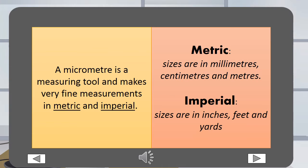Metric sizes are in millimetres, centimetres and metres. Imperial sizes are in inches, feet and yards.